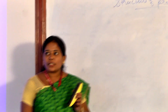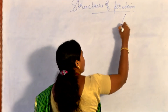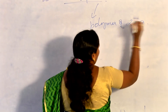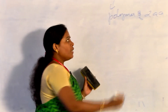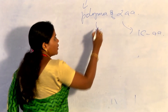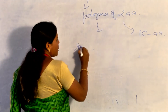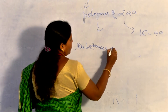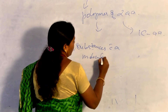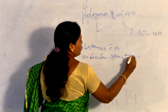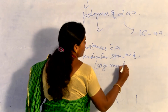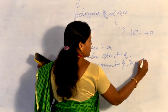Protein is nothing but a polymer of alpha amino acids. Here, alpha refers to the first carbon atom of the amino acids. Polymers are substances with a molecular structure built from a large number of similar subunits.